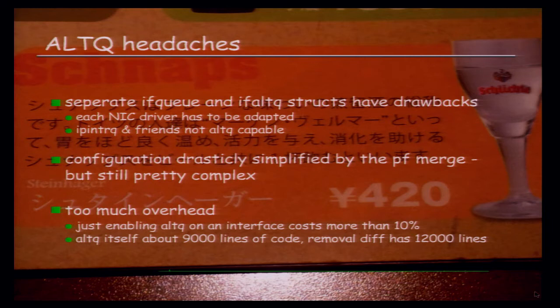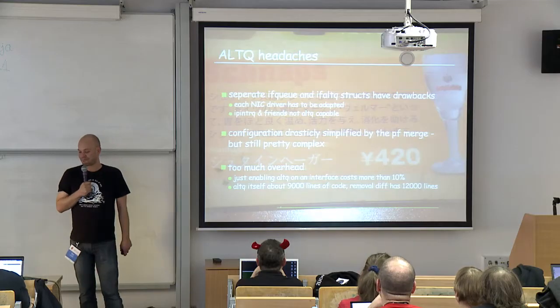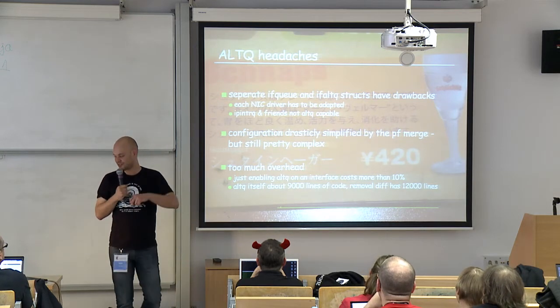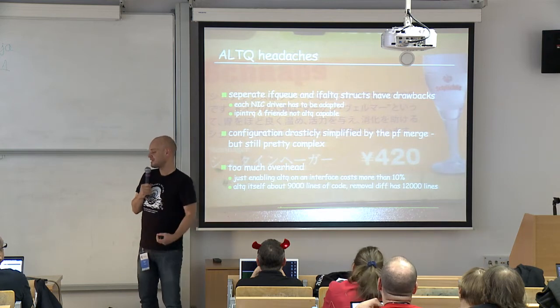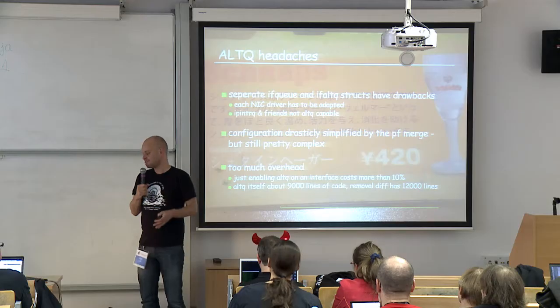Problems. The separation between the ifq struct and the ifaltq struct has considerable drawbacks. Each and every network driver had to be adjusted and converted to ALTQ. Lots of support functions and macros had to exist in both versions. And queues that didn't happen to be in network drivers were not and are not ALTQ-capable.